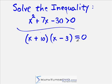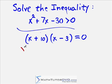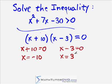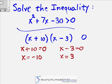So up until now, if this were an actual equation, these would be your solutions. You would go and solve: x plus 10 equals zero, giving x equals negative 10; and x minus 3 equals zero, giving x equals positive 3. If this were just a regular equation, you would circle these two values as the answer, because these are the exact values that make the whole thing equal to zero. However, our real inequality is not equals — it's a greater than sign.